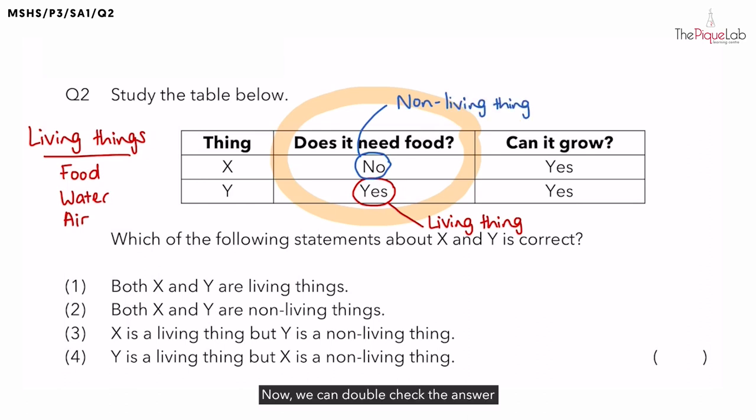Now, we can double-check the answer using the second characteristic. The question is, can it grow? So, is the ability to grow a characteristic of living things or non-living things? This is the characteristic of living things. Therefore, if you take a look at Y, it can grow. So, we can now confirm that Y is a living thing.